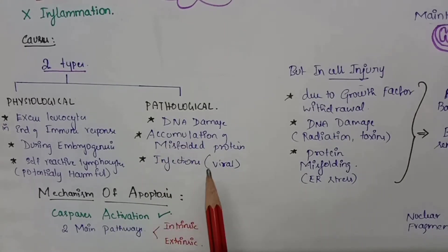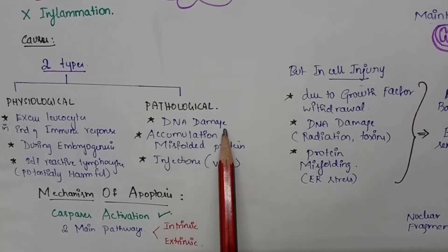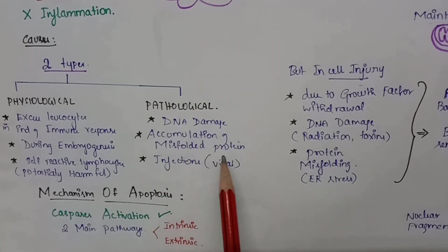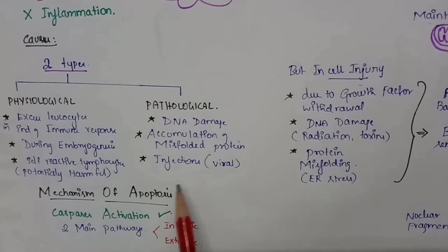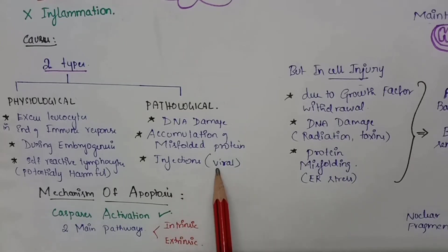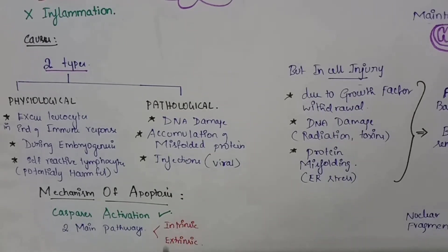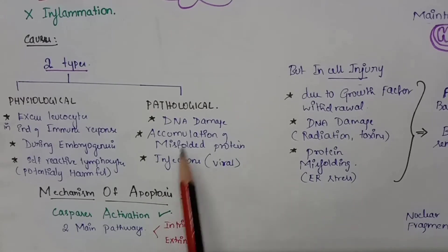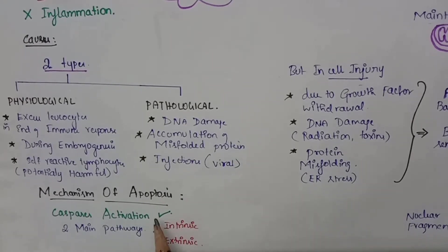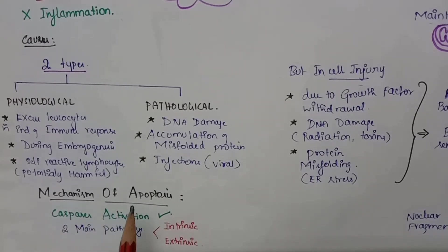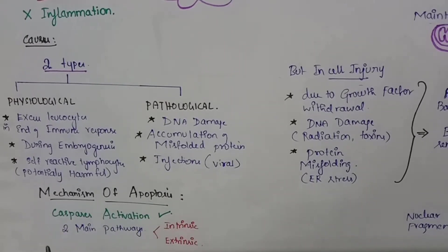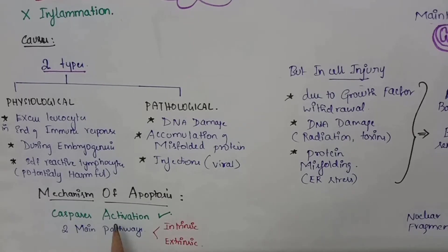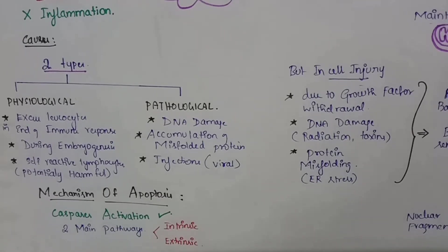In pathological conditions, the examples are DNA damage, accumulation of misfolded proteins, and mainly viral infection. In all these conditions, there will be pathological apoptosis.